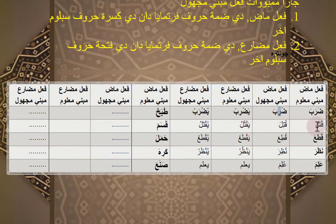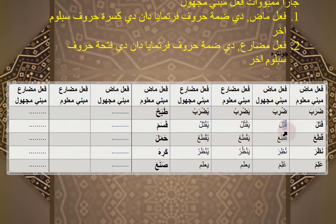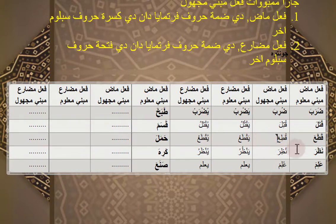Kotala, ini Mabni Maklum, Mabni Majulnya menjadi Kutila. Kaedahnya: di-dhammah huruf pertamanya yaitu Kaf, dan di-kasrah huruf sebelum akhir yaitu Ta. Maka Kotala menjadi Kutila. Kotoa dijadikan Majul: huruf pertamanya Kaf menjadi Ku, huruf sebelum akhir To menjadi Ti, menjadi Kuti'ah, artinya diputus. Nazoro menjadi Nuziro: di-dhammah awalnya yaitu Nun, dibaca kasrah huruf sebelum akhir yaitu Za, menjadi Nuziro.